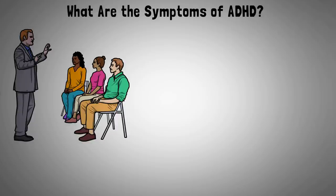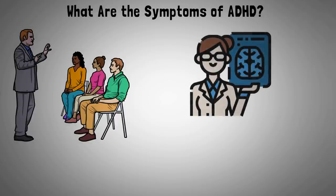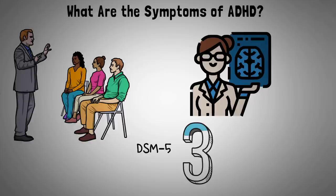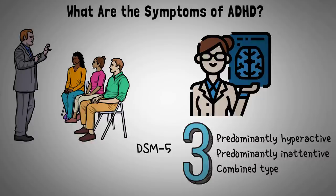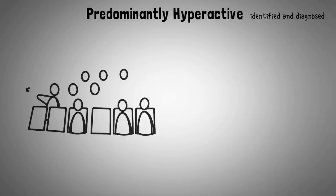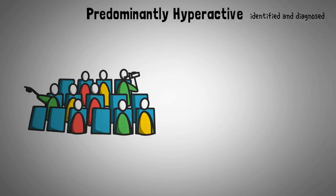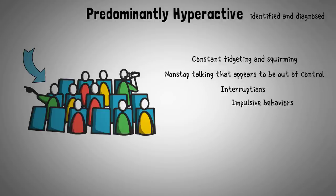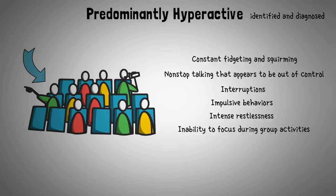The language surrounding ADHD symptoms has probably changed since you were introduced to it. Rather than diagnosing someone with ADD, a clinician may now diagnose a patient with a specific type of ADHD. The DSM-5 recognizes three categories: predominantly hyperactive, predominantly inattentive, and combined. Predominantly hyperactive is the type traditionally identified — the hyper kid in class, usually a boy. Symptoms include constant fidgeting and squirming, non-stop talking, interruptions, impulsive behaviors, intense restlessness, and an inability to focus during group activities.